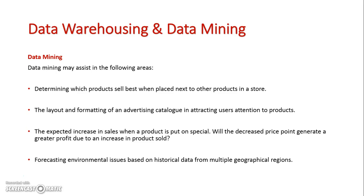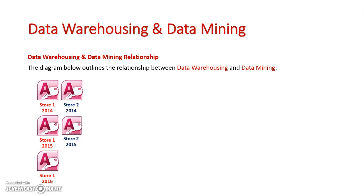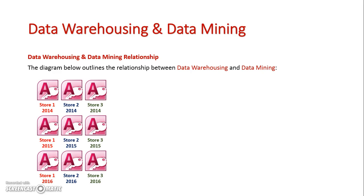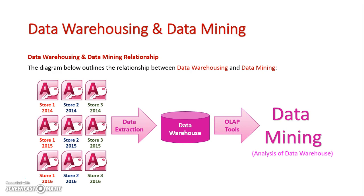Let's graphically look at the combination of data warehousing and data mining. What we first do is gather all historical databases together. As you can see here, there's store one, store two, and store three, with three years' worth of databases loaded up for each — nine databases in total. We then extract all the data from those nine databases into our data warehouse, and use our OLAP tools to data mine it.